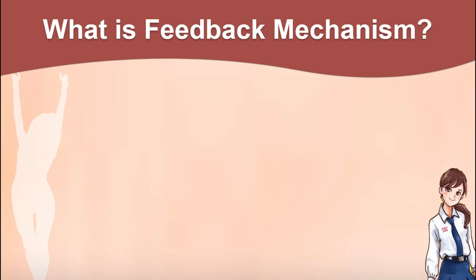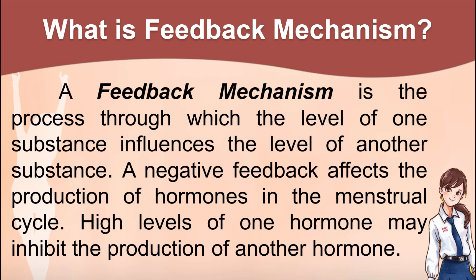Now you already know what is meant by the menstrual cycle. But why do these things happen? Have you ever heard about the feedback mechanism? A feedback mechanism is the process through which the level of one substance influences the level of another substance. Negative feedback affects the production of hormones in the menstrual cycle. High levels of one hormone may inhibit the production of another hormone.